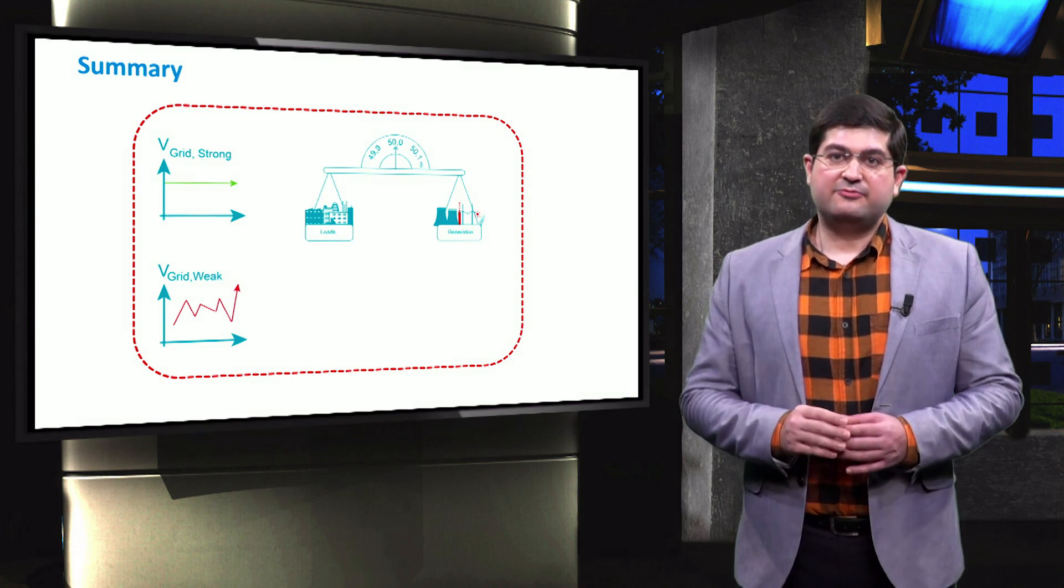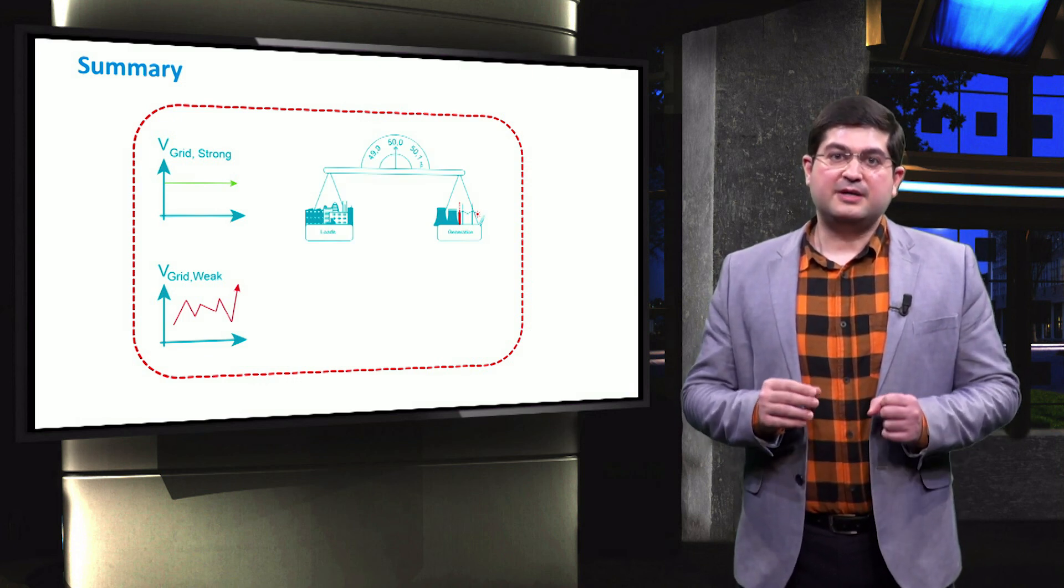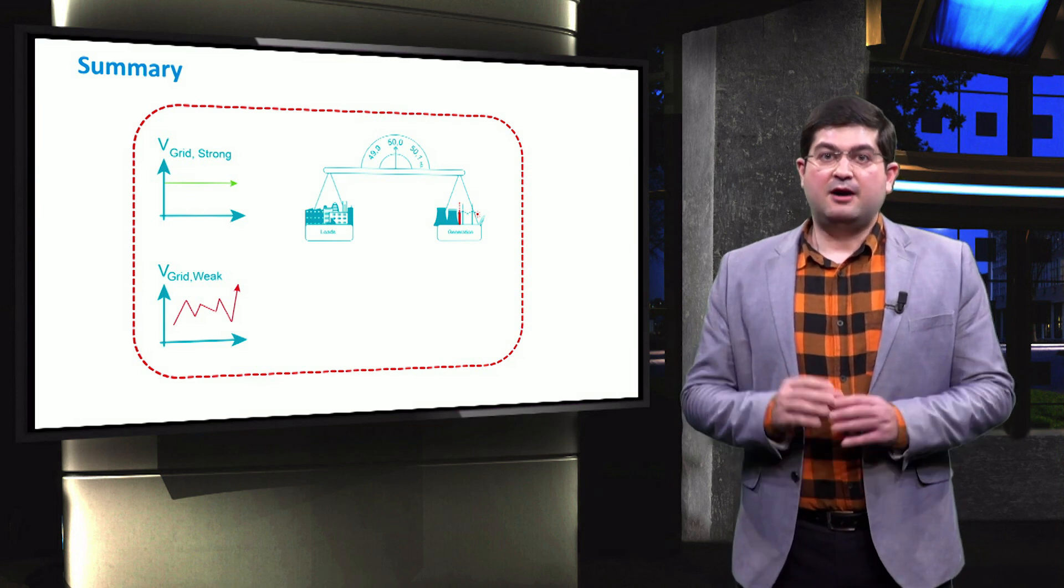We discussed that frequency and voltage are dominantly controlled by the grid when it is strong.